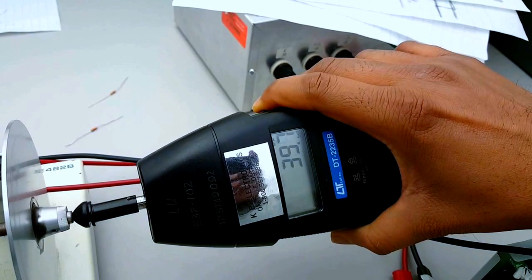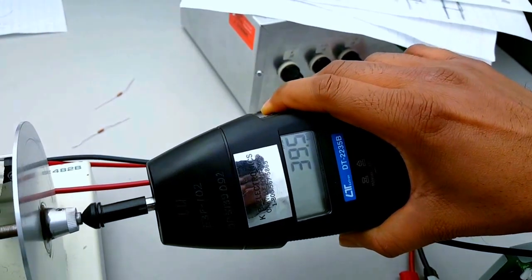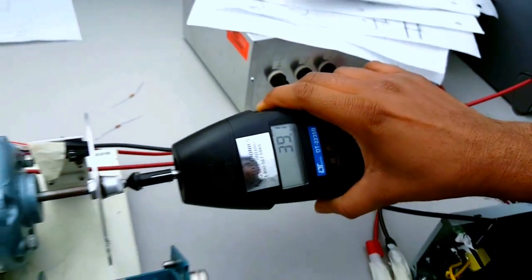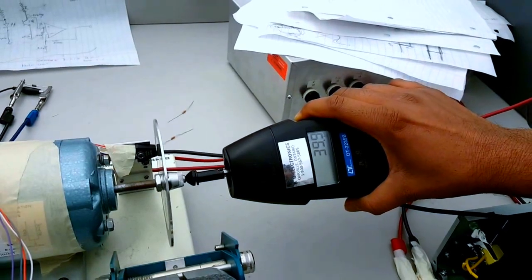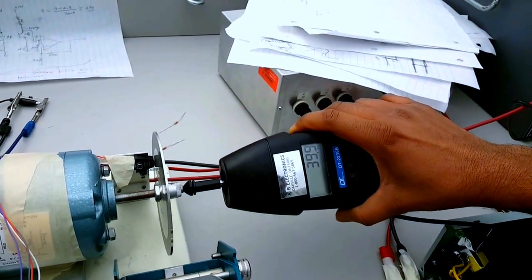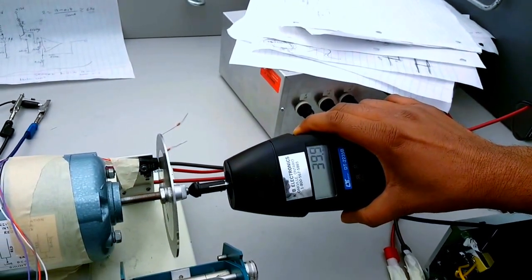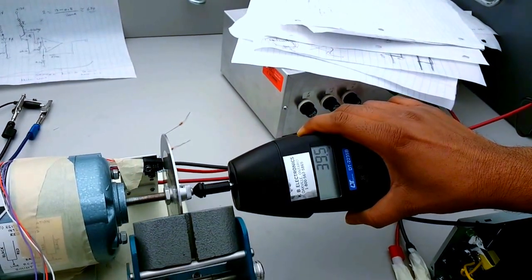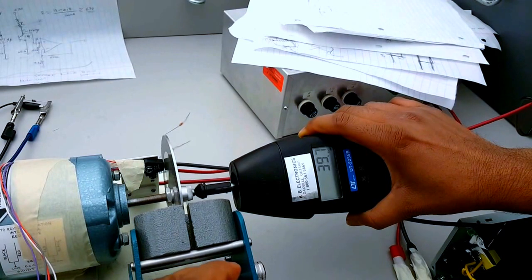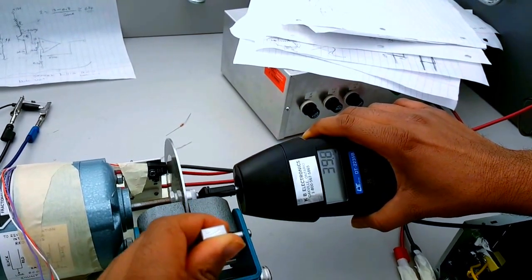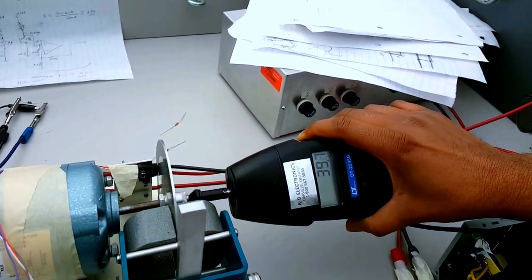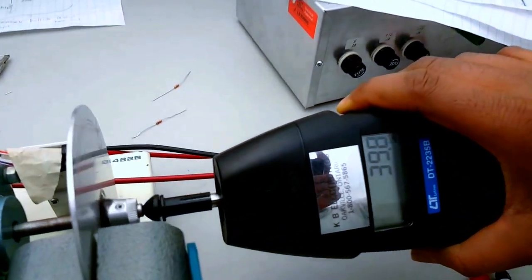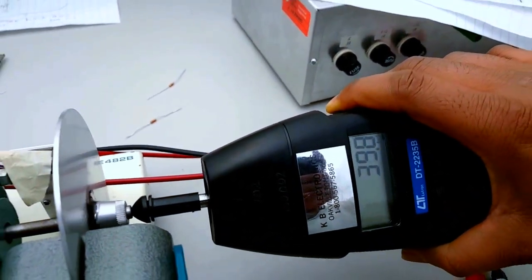This is without the load—unloaded. Now we're going to load the motor slowly. As you can see, the speed doesn't change at all; speed remains constant. This is fully loaded, and the speed hasn't changed a bit.